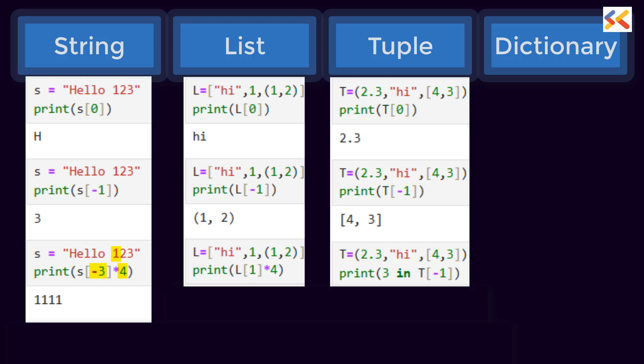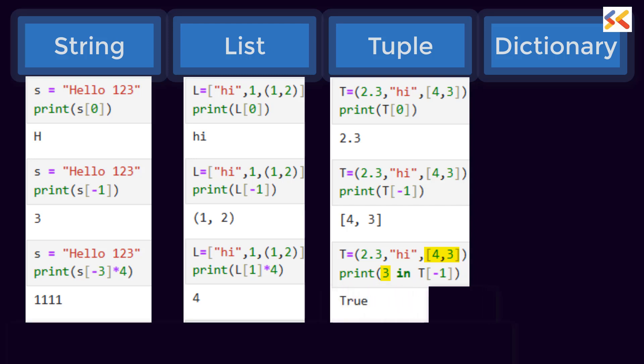Now in list also, we multiply by 4. Here the answer is 4 because the data type of 1 is integer here. Now in the tuple question, what will be the answer? T minus 1 returns a list and it will search for 3 as one of the elements of that list. Since it exists, the answer is true.